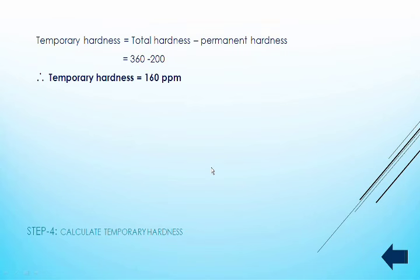Now we can calculate temporary hardness. That is the difference between total hardness and permanent hardness: 360 − 200 = 160 ppm. So here we got temporary hardness as well.